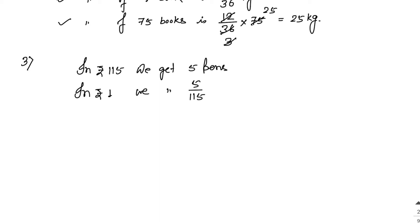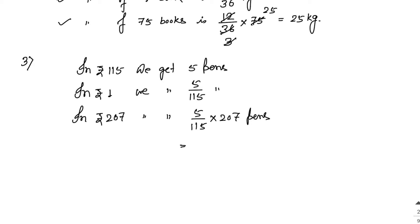In rupees 1 we get 5 by 115 pens. In rupees 207 we multiply: 207 into 5 by 115 pens. Now 115 divided by 5 is 23, then 207 divided by 23 equals 9. So your answer is 9 pens.